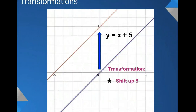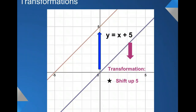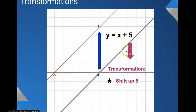Let's look at some examples. We have the equation y equals x plus 5. In this equation, you can see the parent function in purple, going right through 0, 0 with a slope of up 1, over 1. But when we transform it by having a shift up of 5, our line just picks up and shifts upwards.